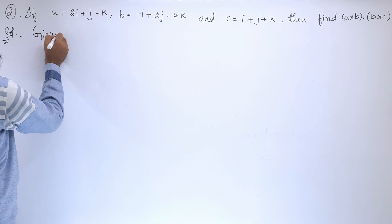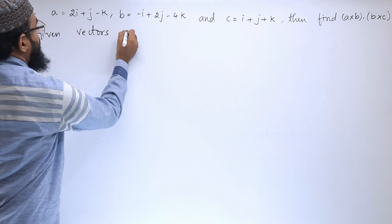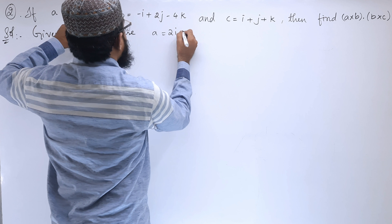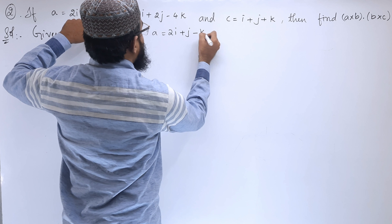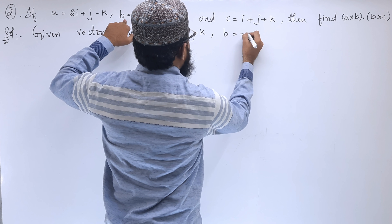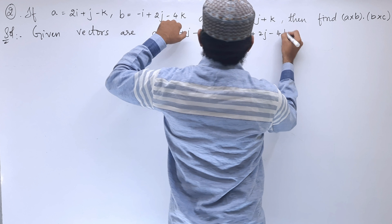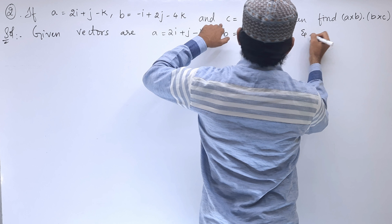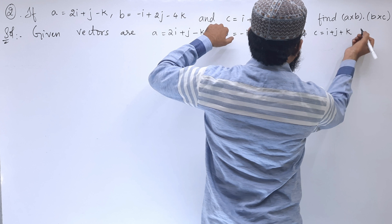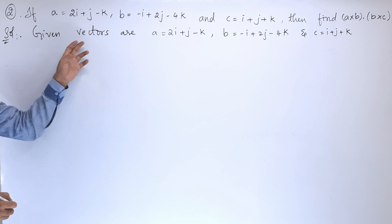Given vectors are: vector a = 2i + j - k, vector b = -i + 2j - 4k, and vector c = i + j - 4k. These are the three vectors.